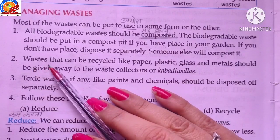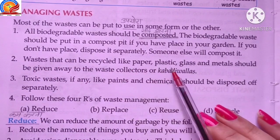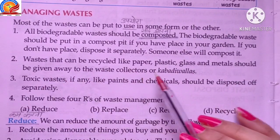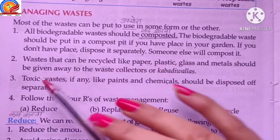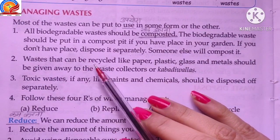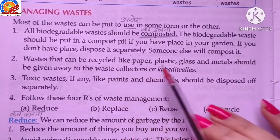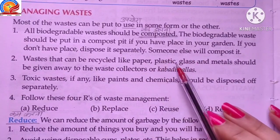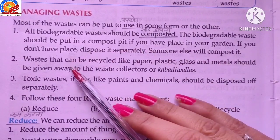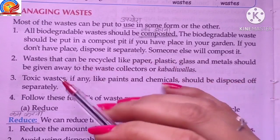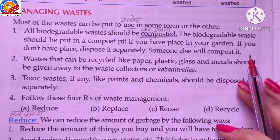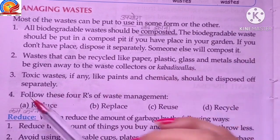Point second: waste that can be recycled — like paper, plastic, glass, and metal — should be given away to waste collectors (कबाड़ी वाले). These materials can be reused, so such items should be handed over to waste collectors so they can be recycled and put back to use.